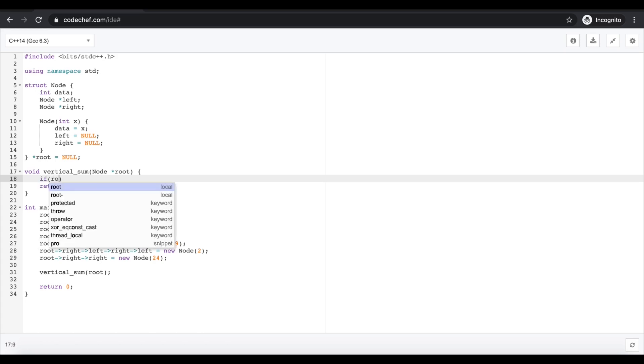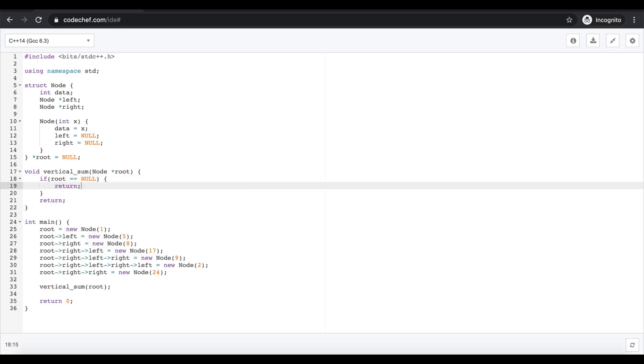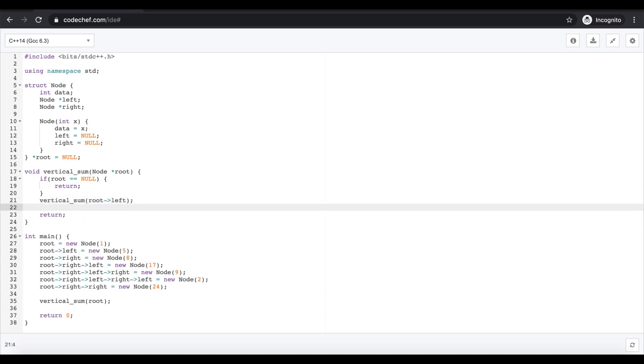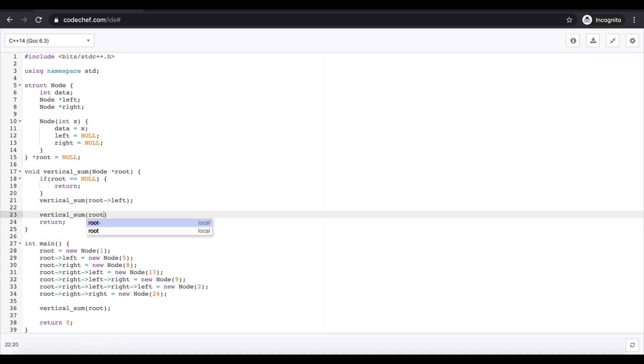If the root is equal to null, which is our current node, then we don't need to do anything. So we'll just return. Otherwise, we'll go to the left node, then we need to do something here, and then we'll go to the right node.